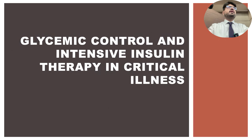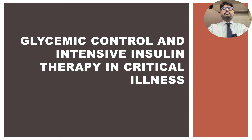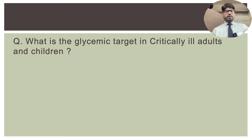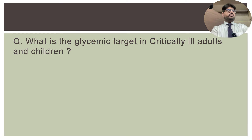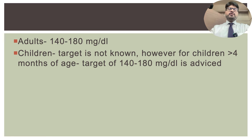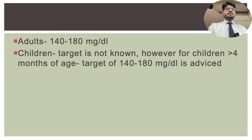Glycemic control and intensive insulin therapy in critical illness is the broad topic for discussion today. The discussion is divided into two parts: first, theoretical aspects and clinical evidence, and second, the practical aspect of initiating and titrating insulin regimes. In critical illness, the general target blood sugar kept for a critically ill patient is a range of 140 to 180 milligrams per deciliter in adults.